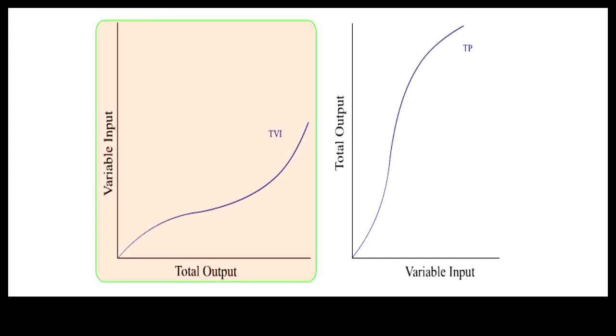If we multiply TVI by a constant unit cost of the variable input, we get total variable cost. Here we assume the unit cost is one dollar, so the vertical axis retains the same scale and is simply relabeled as cost.